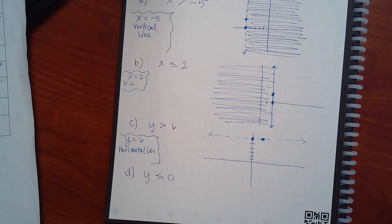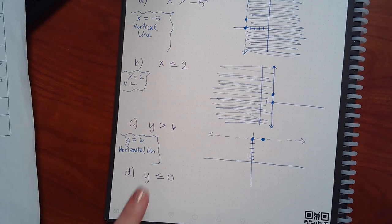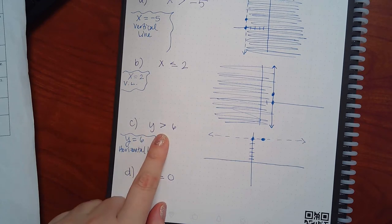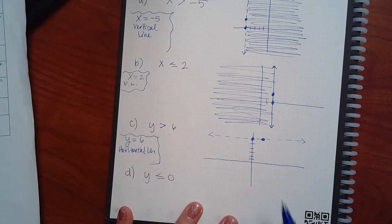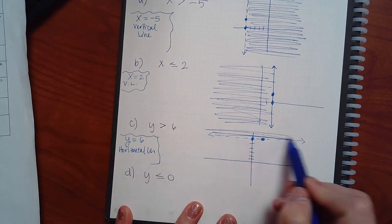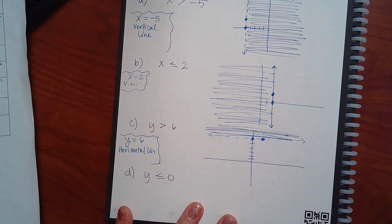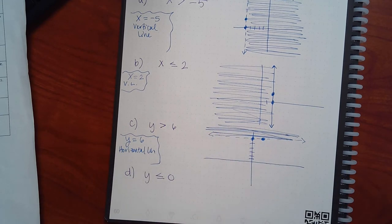Now, where am I shading? Because it's not left or right now — it's up or down, the top or the bottom. So am I shading the top or the bottom? Since y is greater, I'm going to go to the top. In the computer it'll be prettier, but it would be everything above that line.